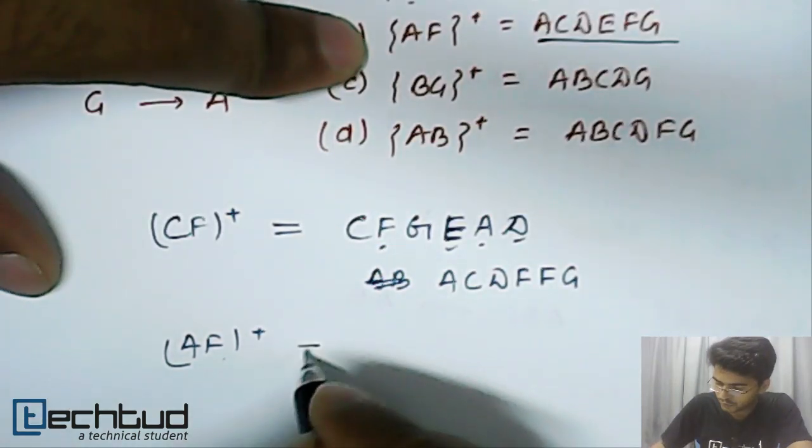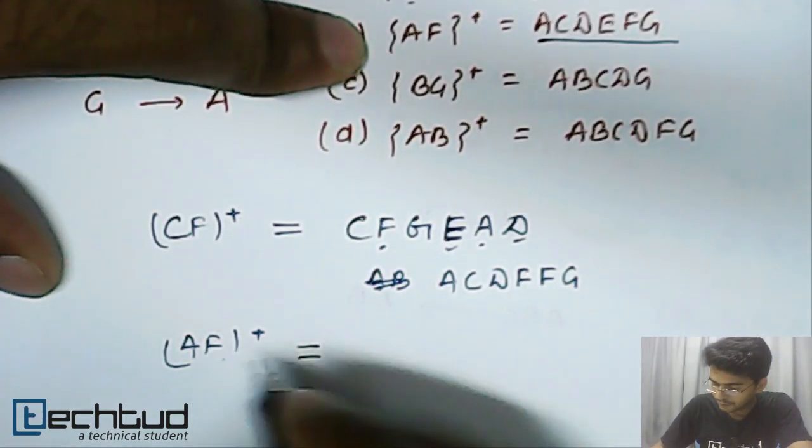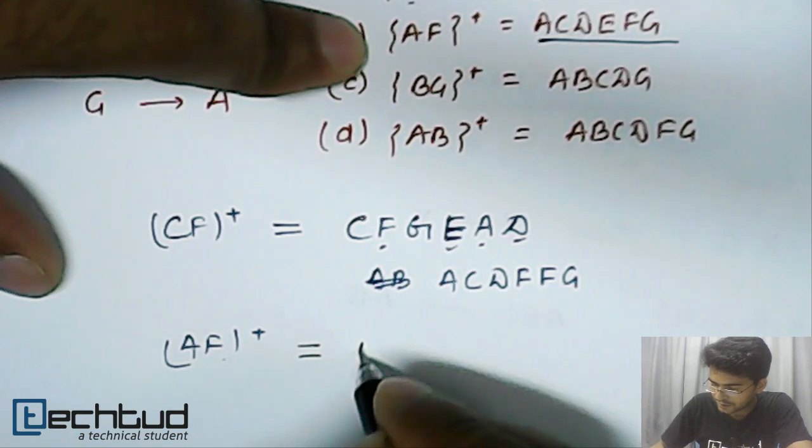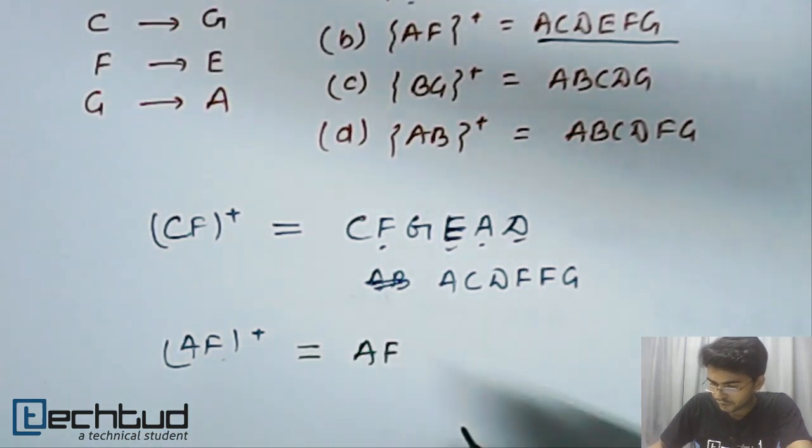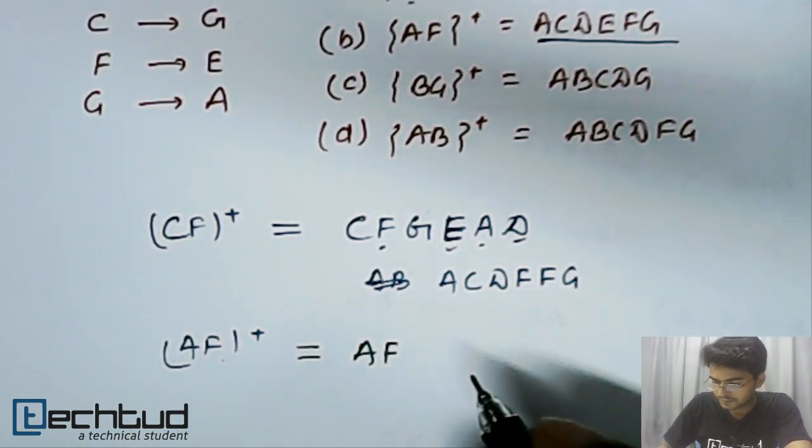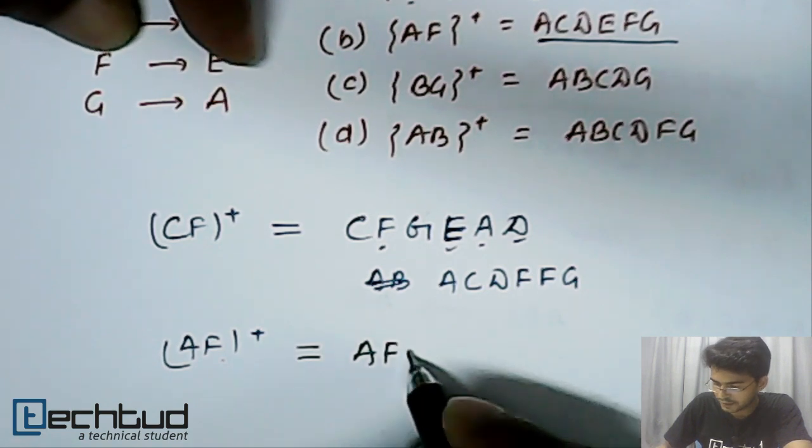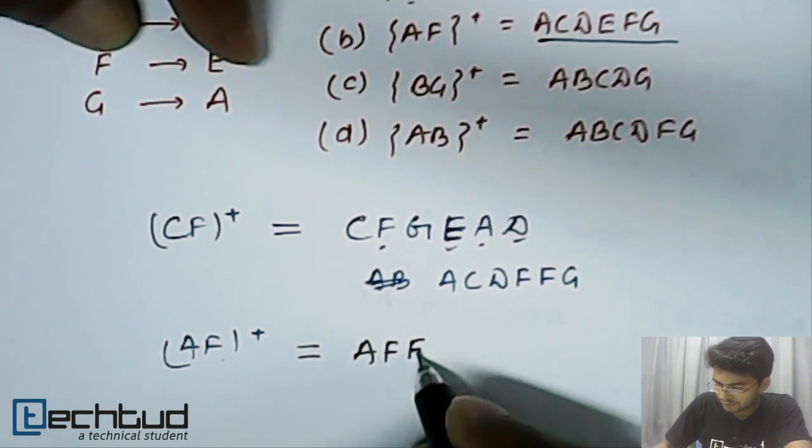As we know that from reflexive rule, A, F can determine A, F. Now, from this F, F can determine E. So, we have E here.